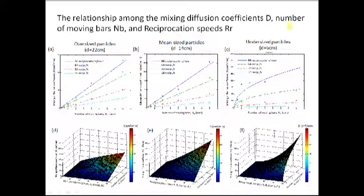This is the relationship among the mixing diffusion coefficient, number of moving bars, and reciprocation speed for oversized, mean-sized, and undersized particles. D, E, F are 3D graphs drawn by using same data of A, B, C respectively.